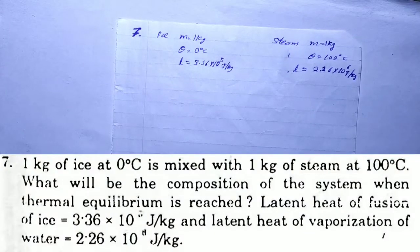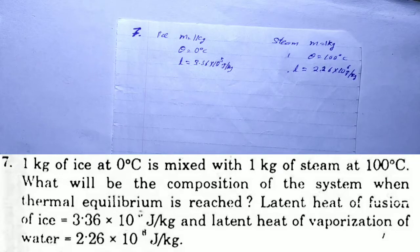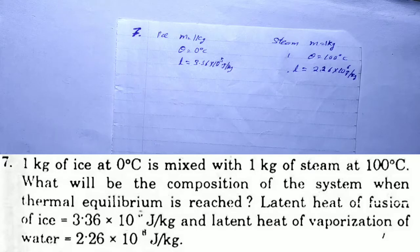HC Verma solution, Chapter 25, Calorimetry, Question Number 7. 1 kg of ice at 0 degree Celsius is mixed with 1 kg of steam at 100 degree Celsius. What will be the composition of the system when thermal equilibrium is reached? Latent heat of fusion of ice is 3.36 into 10^5 and latent heat of vaporization of water is 2.26 into 10^6.